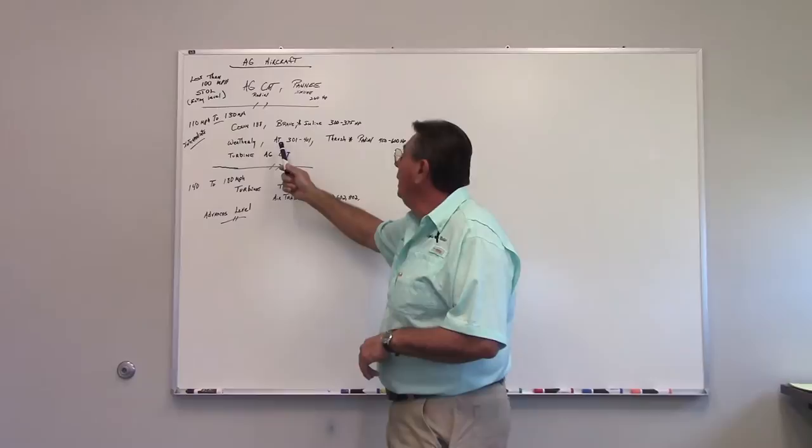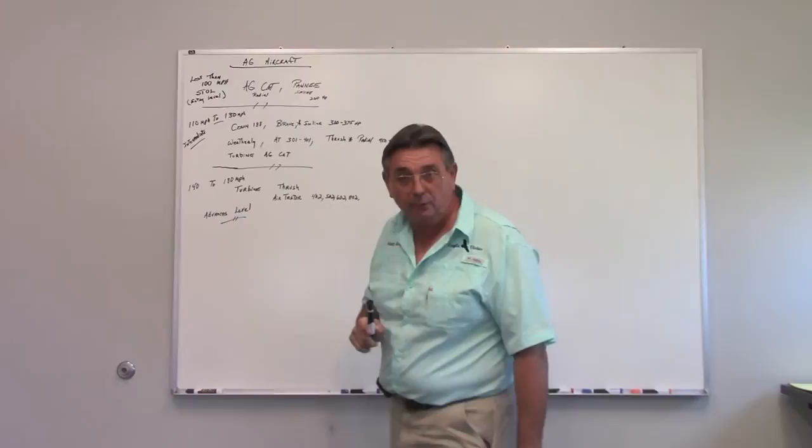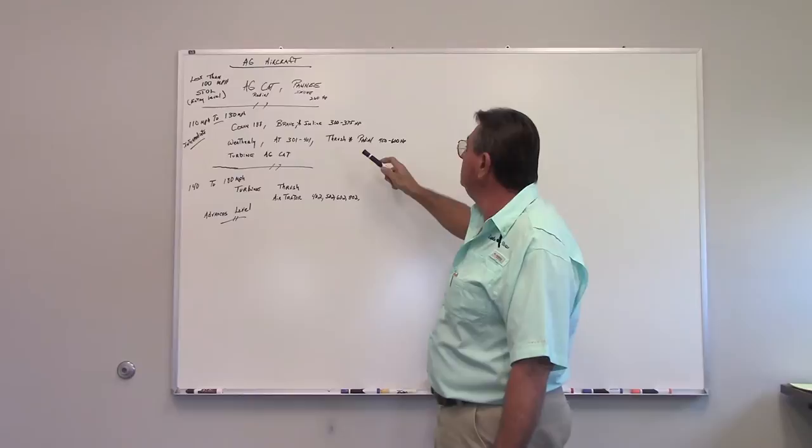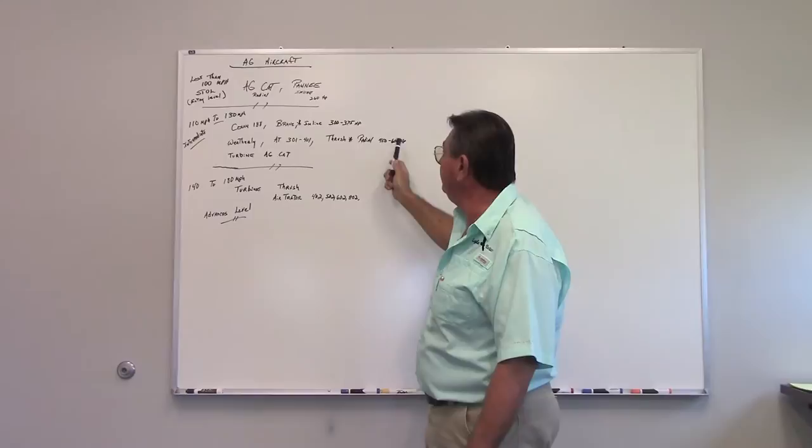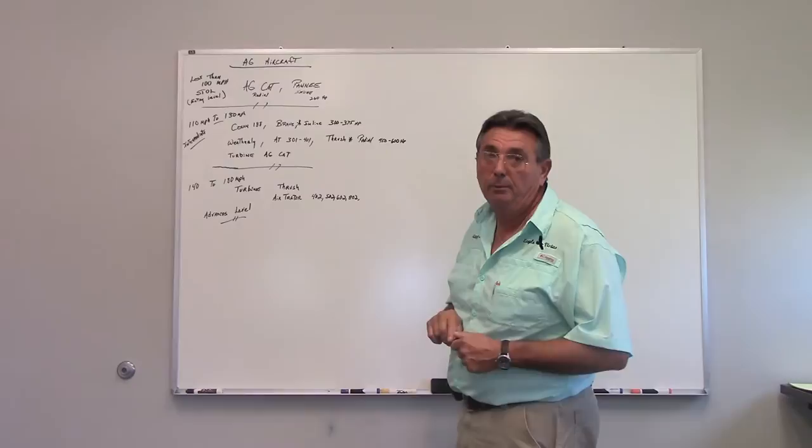Then we had the Weatherly that came into existence. The air tractor made by Leland Snow, the 301 and 401 are radial versions. The Thrush radial, the Weatherly uses a 450 Pratt & Whitney, and the Thrush uses a 600 as the 301 and 401 do, a 1,340 cubic inch Pratt & Whitney engine.